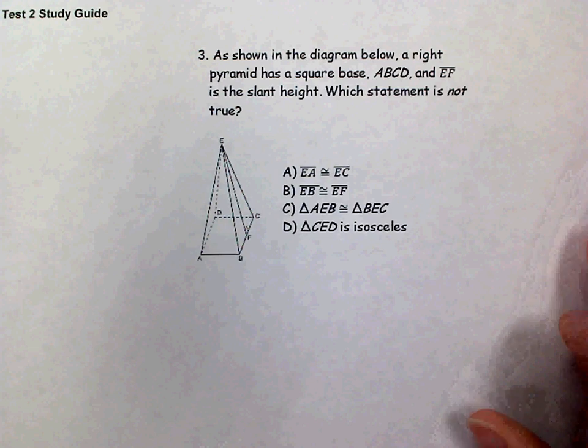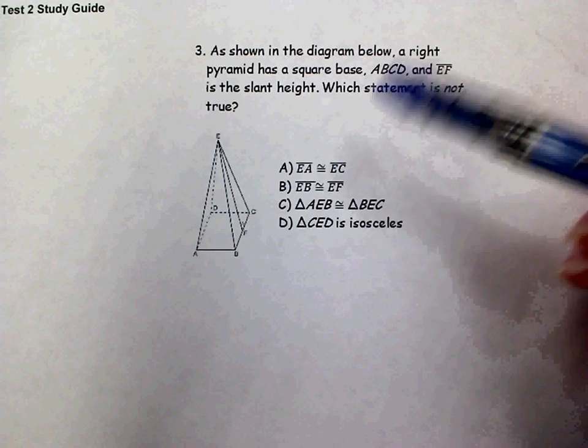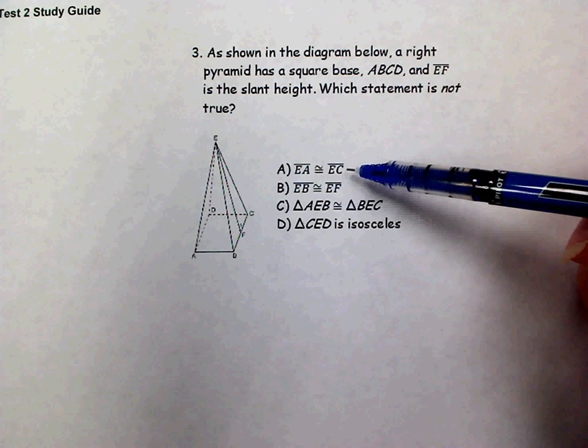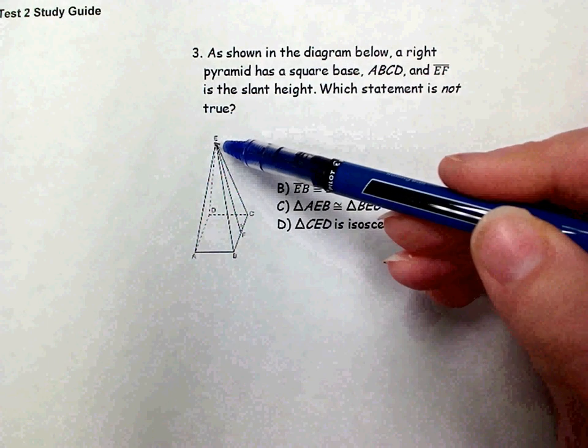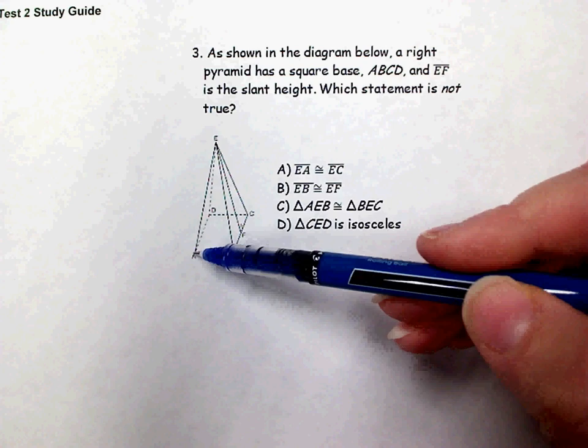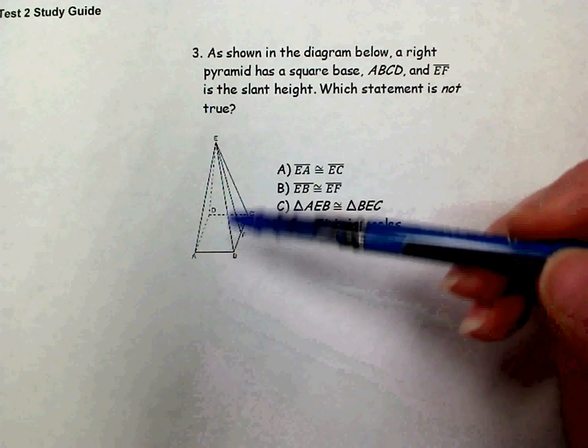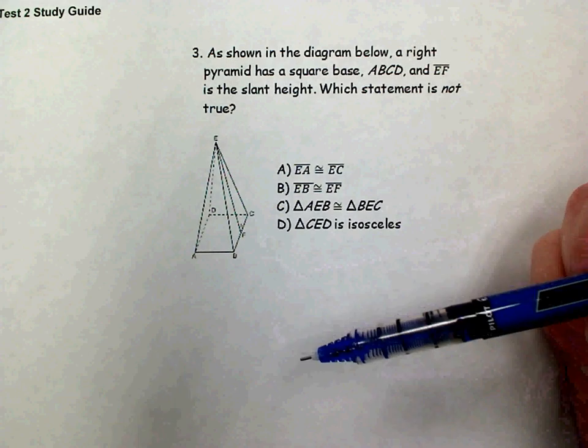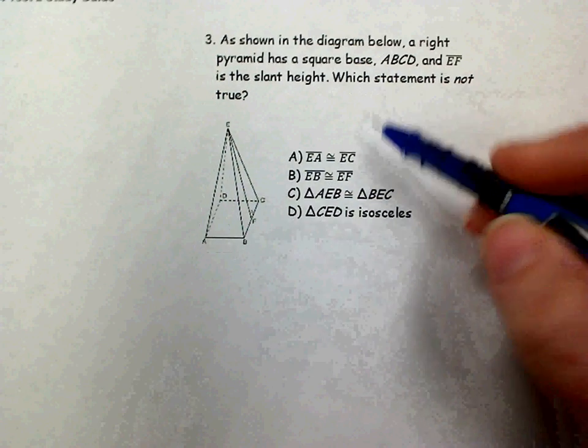It wants to know which one of these statements is not true. The first statement says EA and EC are congruent segments. Well, EA is from the apex to one of the vertices of the square base, and since EC is also from the apex to a vertex of the square base, those would be the same length.